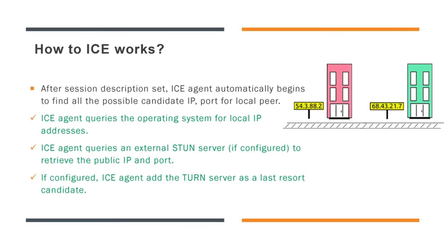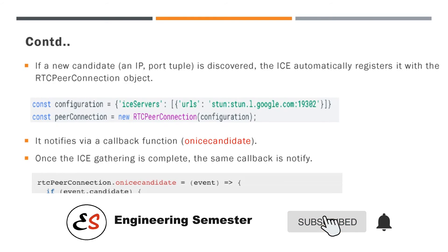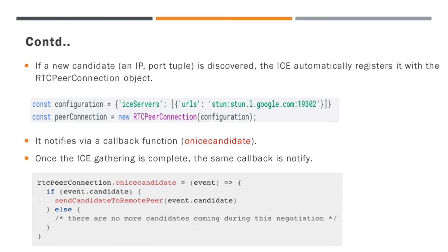We already discussed in the last video about local and remote description. Once a session description is set, the local ICE agent automatically starts the process of discovering all possible local candidate IP and port. First, it asks the operating system for the public IP address. If this fails, then the ICE agent asks the STUN and TURN server for the IP address, if those servers are configured. In WebRTC there is a callback called onICECandidate. ICE automatically registers the IP details in this callback with the RTC peer connection object. Once the ICE gathering is complete, the same callback is fired to notify the application.